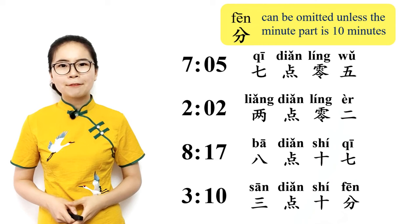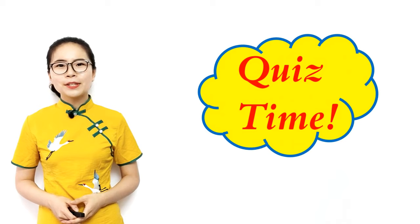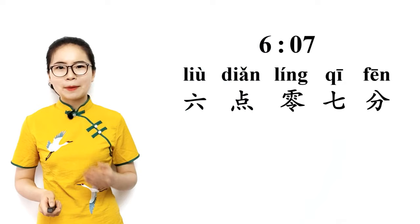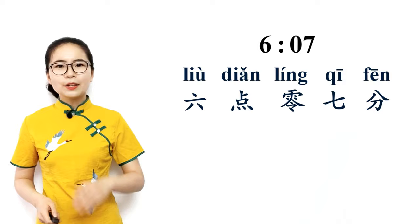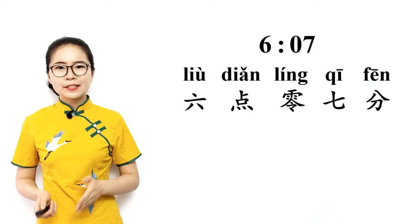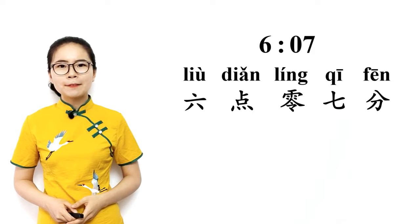Okay, now let's have a quiz. How do you say 6:07? Six or seven is 六点零七分 — it's the hour part 六点, six o'clock, followed by the minute part 零七分, zero seven. 六点零七分. Since the minute part here is not 10, you can omit 分 and just say 六点零七.